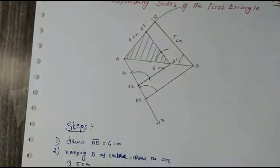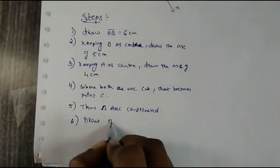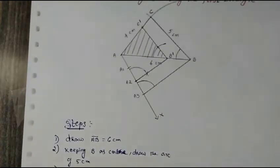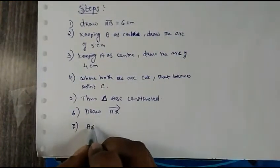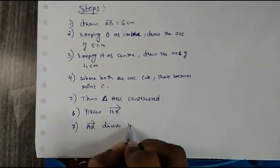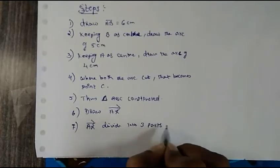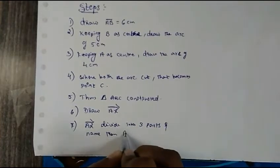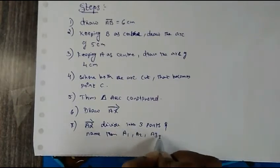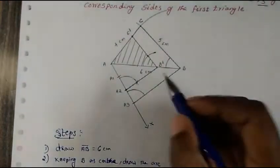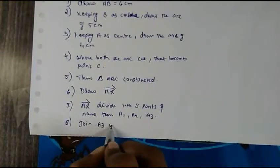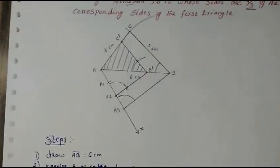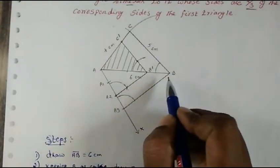Step 5: Draw ray AX. Step 6: Divide it into 3 equal parts and name them A1, A2, A3. Step 7: Join A3 with B. Step 8 and 9: Construct a parallel line through A2 to get B dash — that is, A2B dash parallel to A3B.